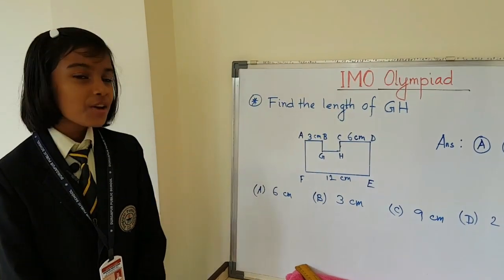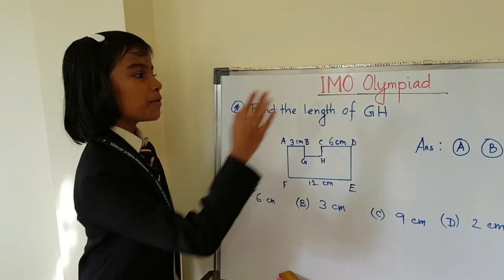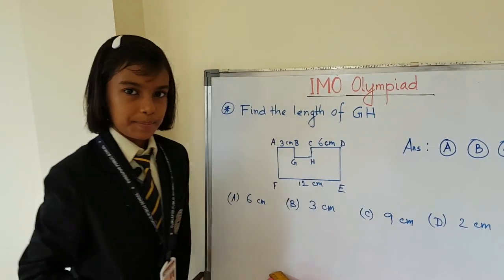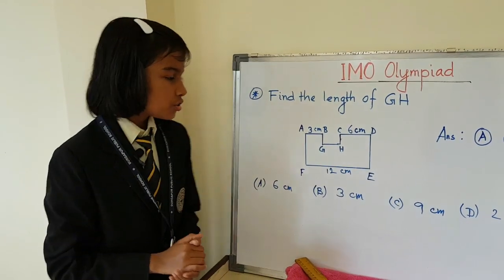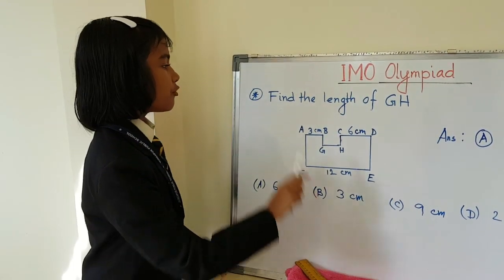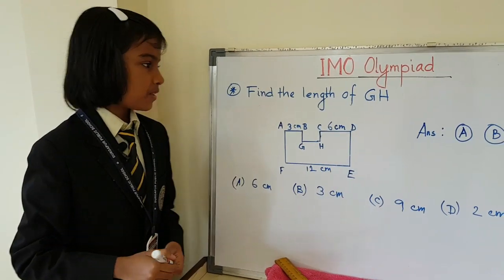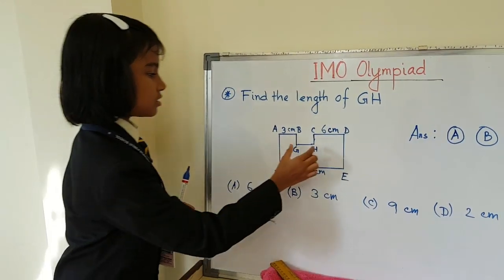Hello friends, today we are going to start the preparation of IMO Olympiad. So every day we are going to do some questions. Our first question is find the length of GH, which is this line. We have to find the length of this line.